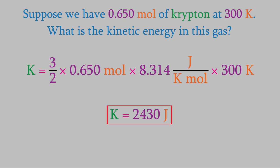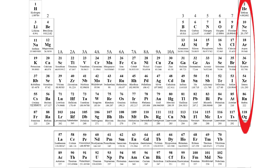You might have noticed something strange: we had the gas krypton, but we never used that information. We would have gotten the exact same result with 0.650 moles of helium, hydrogen, or any other gas. That doesn't sound very realistic, and in fact this equation really only works for ideal gases. It does work pretty well for the inert gases in the last column of the periodic table, though, because those are the most like ideal gases.